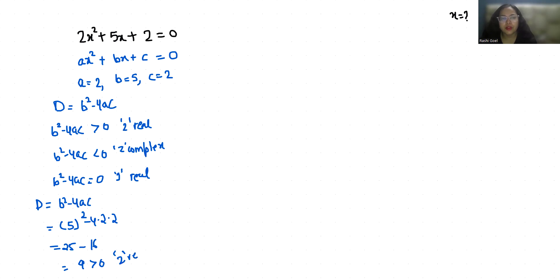So let's find out these real solutions. 2x² + 5x + 2 = 0. I am going to use quadratic formula which is x = (-b ± √(b² - 4ac)) / 2a.